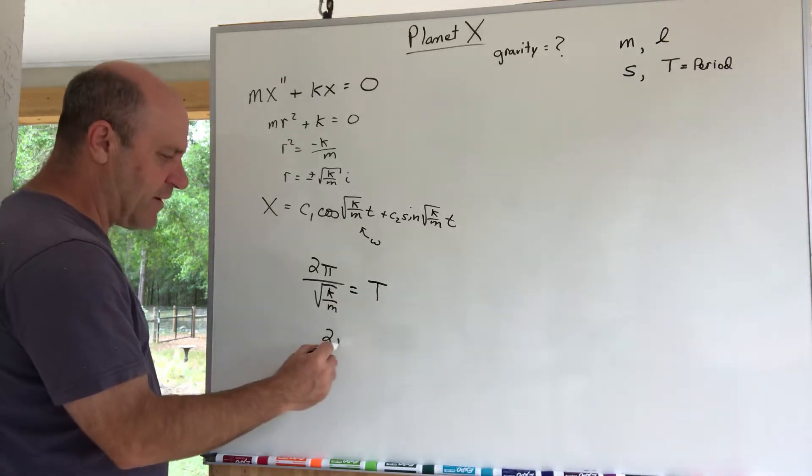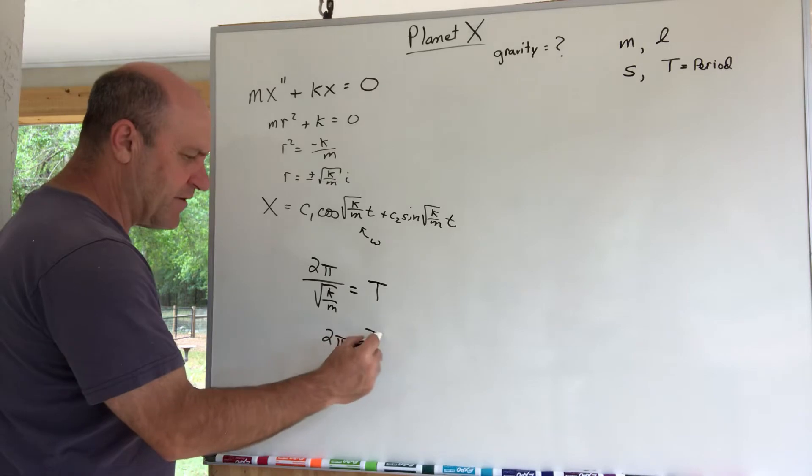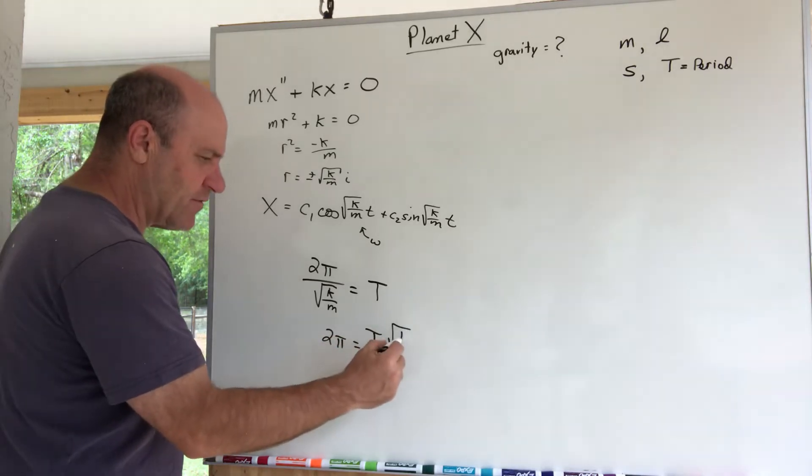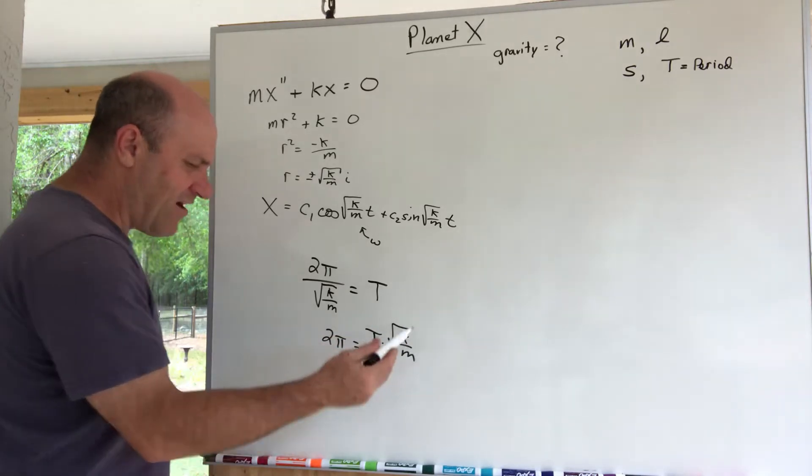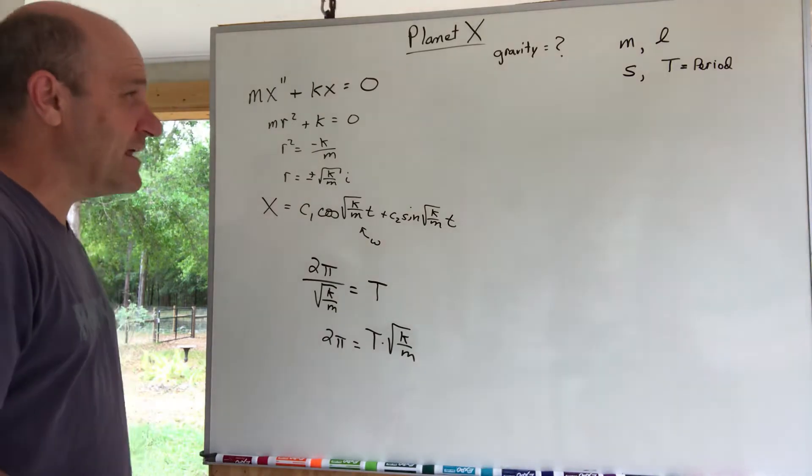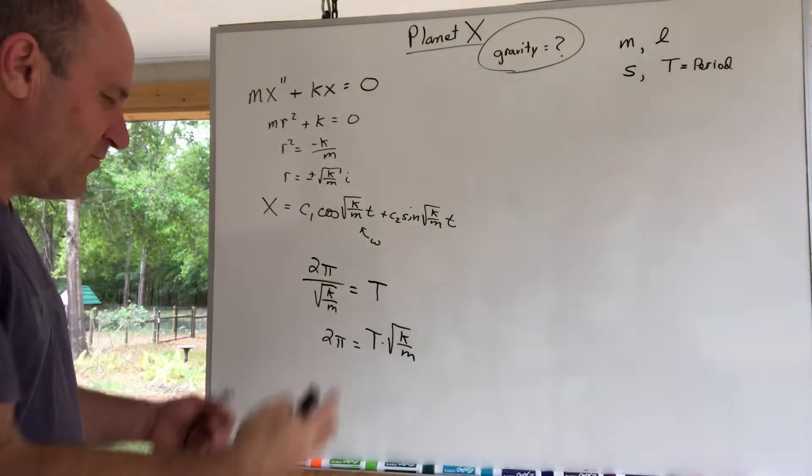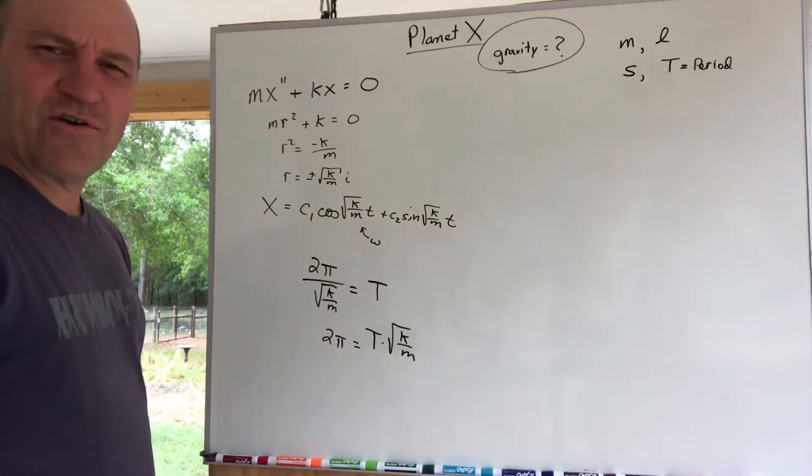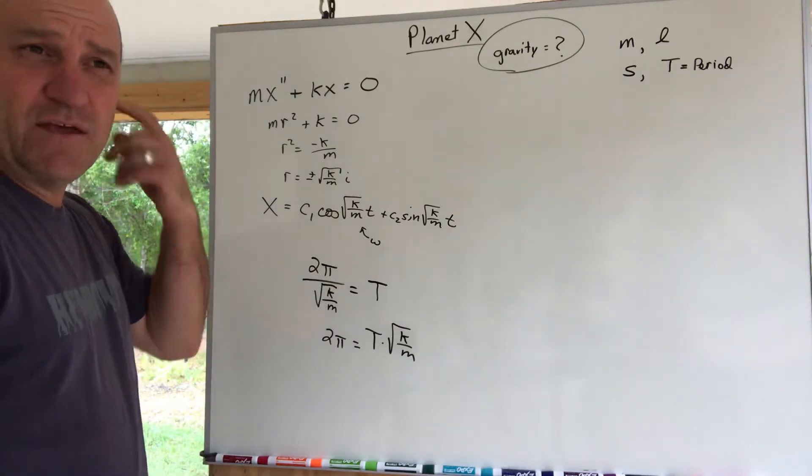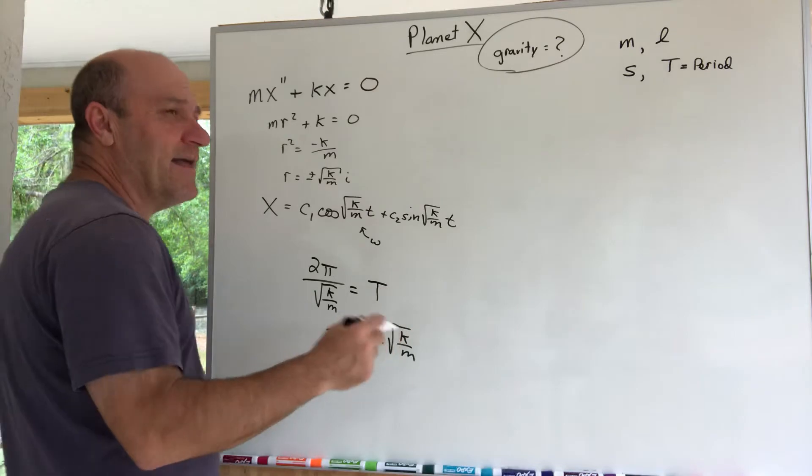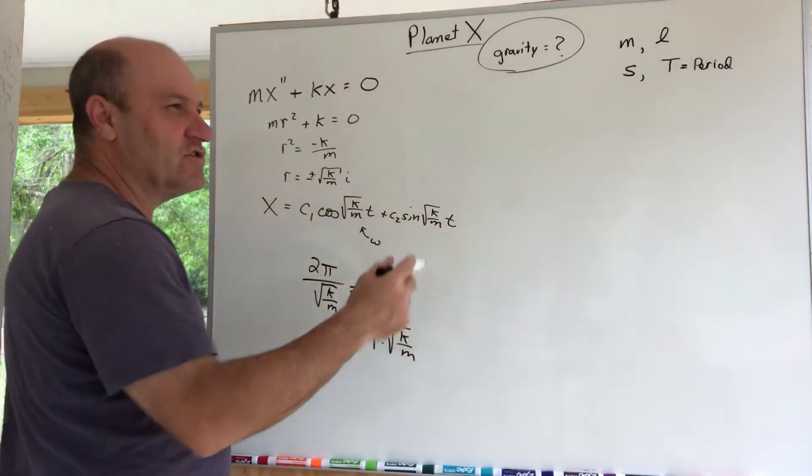Let's see, if you multiply by that denominator, 2π = the period T times the √(K/m). Now they are asking for gravity on this Planet X, and so how do we, you're probably wondering how am I gonna work gravity into this problem?